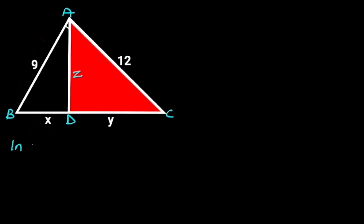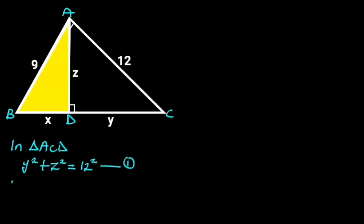In triangle ACD, y squared plus z squared is equal to 12 squared. Let's call this equation 1. In triangle ABD, x squared plus z squared is equal to 9 squared. Let's call this equation 2.